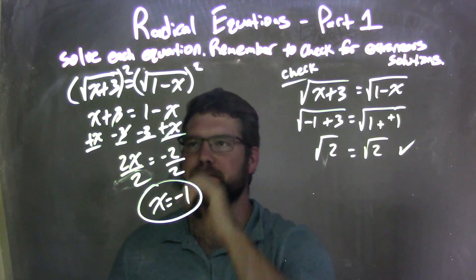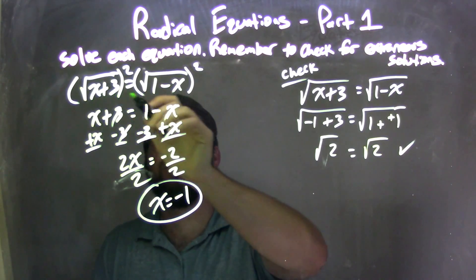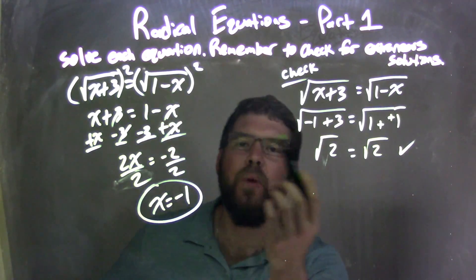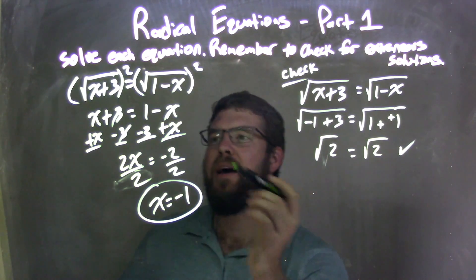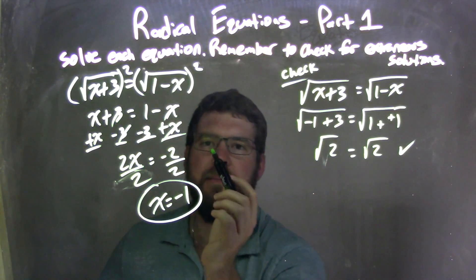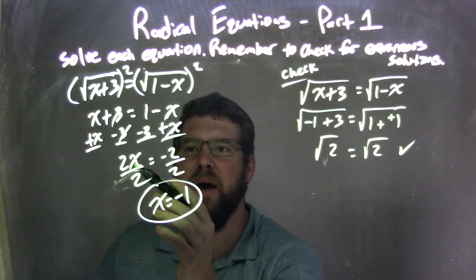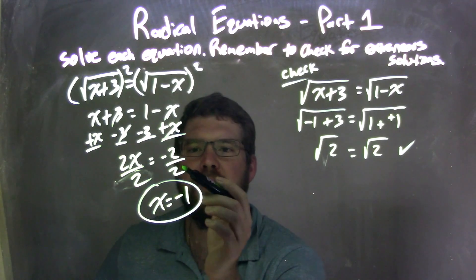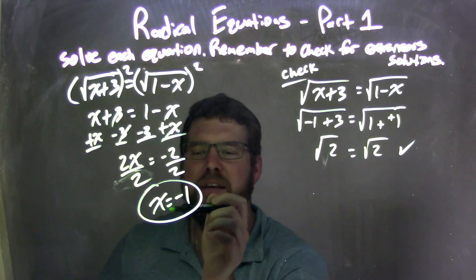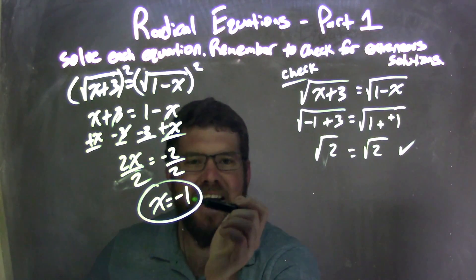So let's recap. Square root of x plus 3 equals square root of 1 minus x. I squared both sides, eliminating the square root. I'm now left with x plus 3 on the left and 1 minus x on the right. I then simplified, brought my x's to the left, numbers to the right, and got 2x equals negative 2. Divided both sides by 2, leaving me with x equals negative 2 divided by 2, which is negative 1.